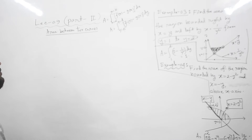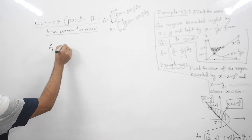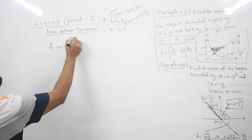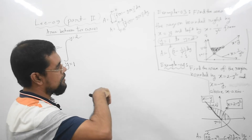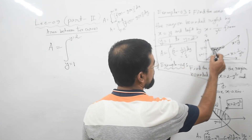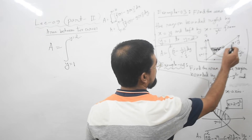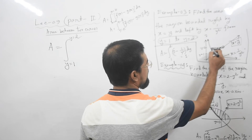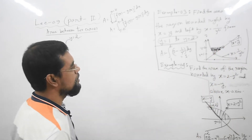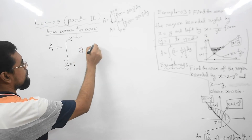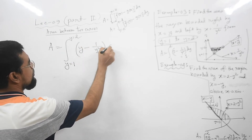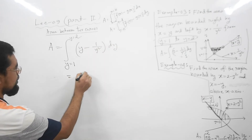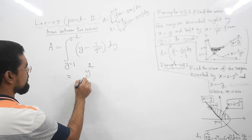Integrating with respect to y, we need to use Formula 2. Integrate from y = 1 to y = 2. The curve on the right is x = y and the curve on the left is x = 1/y². So we subtract 1/y² from y: integrate (y - 1/y²) dy, which gives y²/2 minus y^(-2+1)/(-2+1), evaluated from 1 to 2.